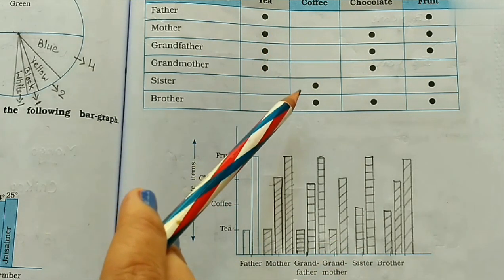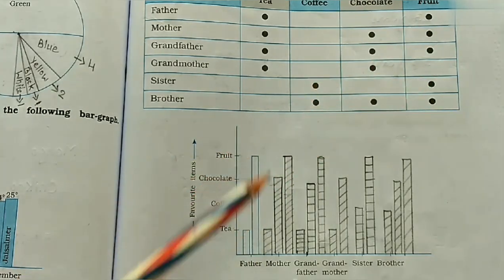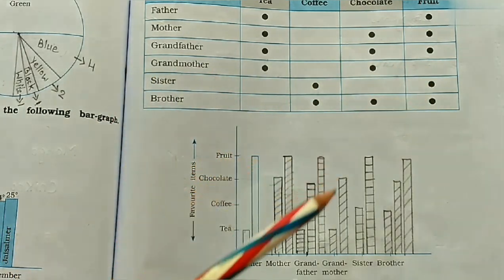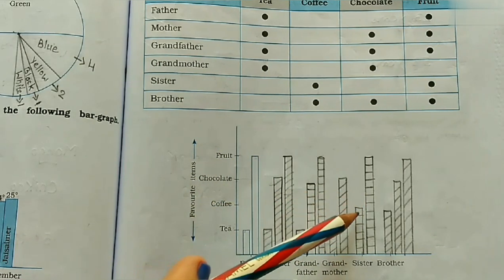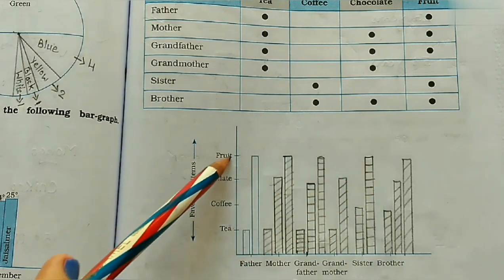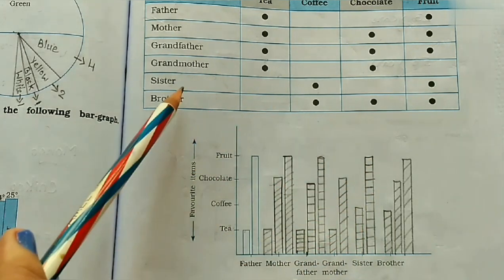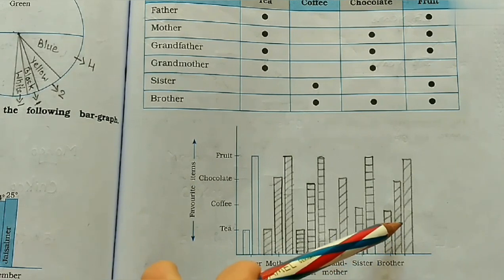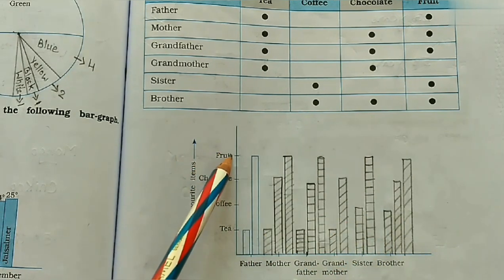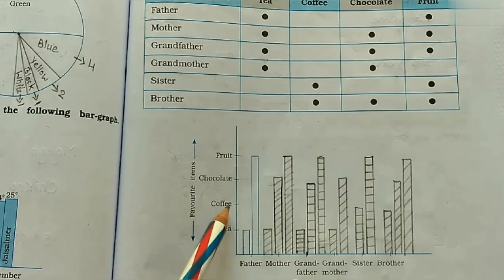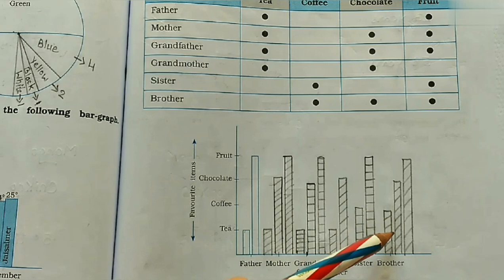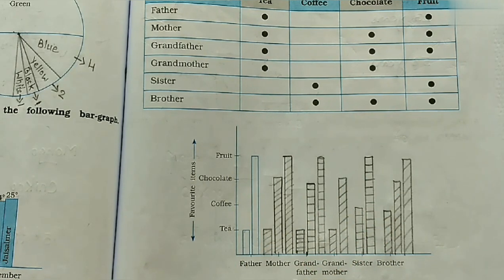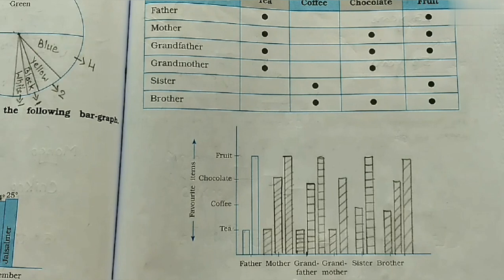Sister likes coffee and fruits. So here you draw coffee — take a measurement with scale — and then fruit. Brother likes coffee, chocolate, and fruits, so brother likes three items. With the help of a scale, take measurements and draw accordingly. Whatever item each family member likes, you draw that in the bar graph. A pie chart shows data in a circle; this one is a bar graph.